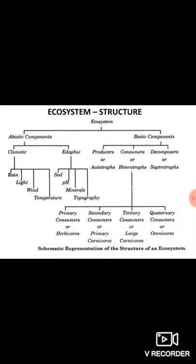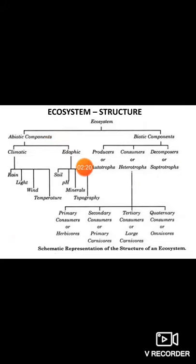We covered the abiotic components and the biotic components. Abiotic components are physical in nature or non-living, and the biotic components are living. We saw different types of abiotic components like climatic and edaphic factors, and the different types of biotic components: producers, consumers, and decomposers. Lecture three will start with a concept defining this and then go into subsequent ecosystem concepts.